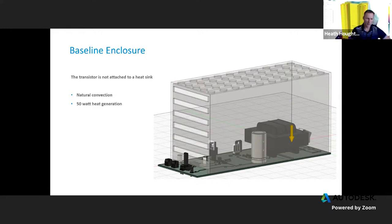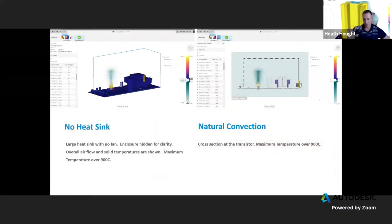What we have is just the enclosure with the circuitry and natural convection, with 50 watts of heat generation on the regulator itself — the TO220 you see kind of standing off by itself. When there's no fan and no heat sink, we're going to have temperatures getting up to a thousand degrees. With 50 watts in that small a space with nothing to really move the air — and the enclosure kind of blocks things — it's going to get really hot. We'll need to look at how we can get rid of that heat.